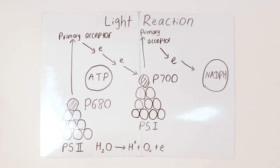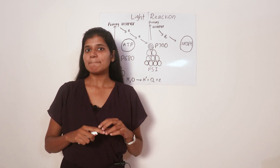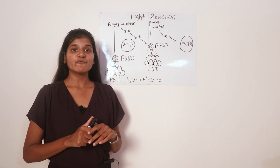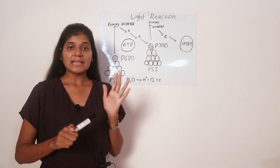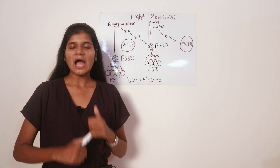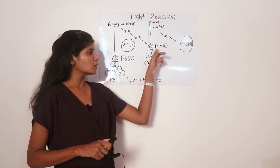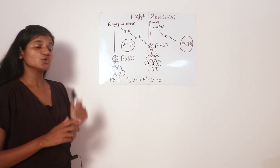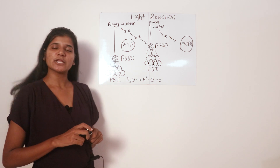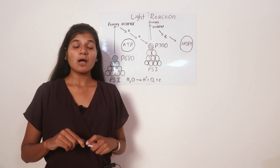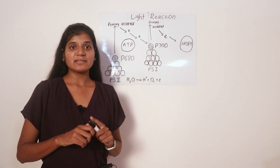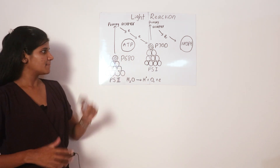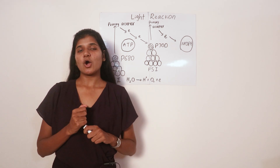In the reaction center complex there is a main chlorophyll A molecule. In PS1 that molecule is called P700, because it absorbs light most effectively at a wavelength of 700 nanometers. In PS2, the reaction center chlorophyll A molecule is P680, because it absorbs visible light most effectively at 680 nanometers. That covers the photosystems found on the thylakoid membranes.